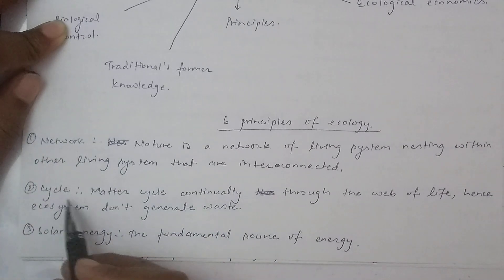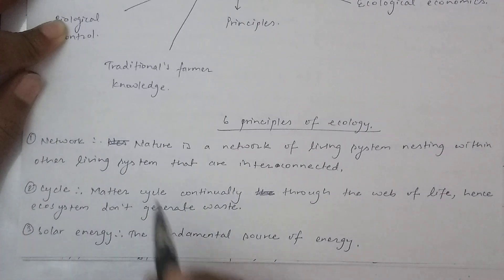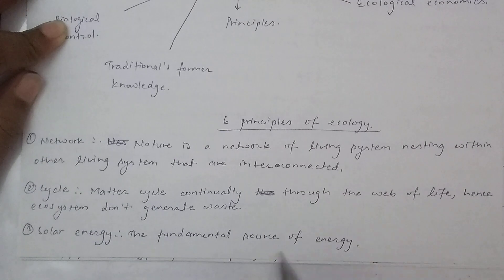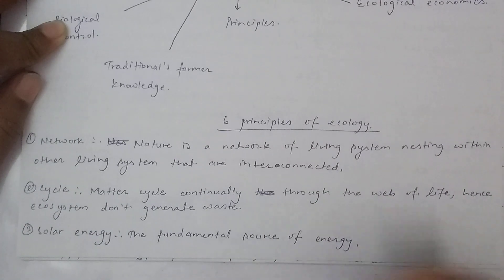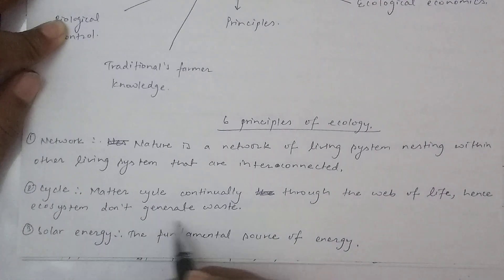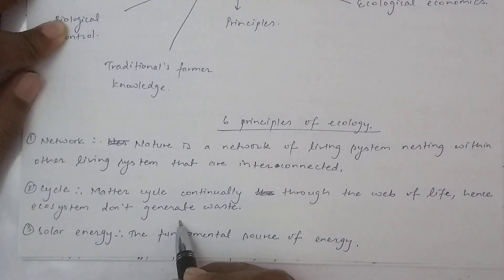The second principle is the cycle. All matter cycles through the web of life. The ecosystem operates as a network of cycles.